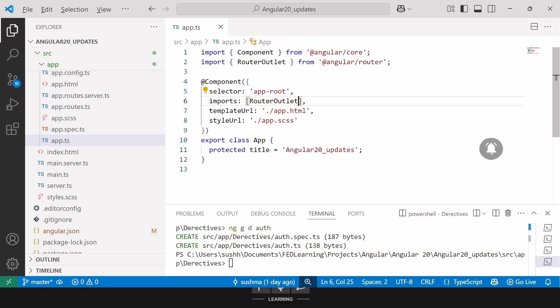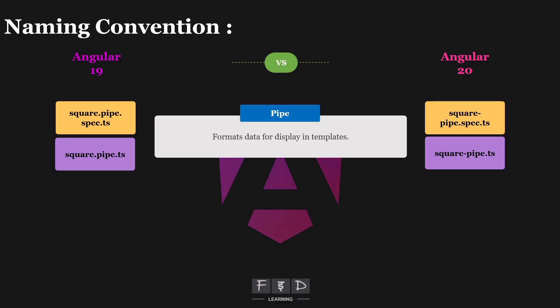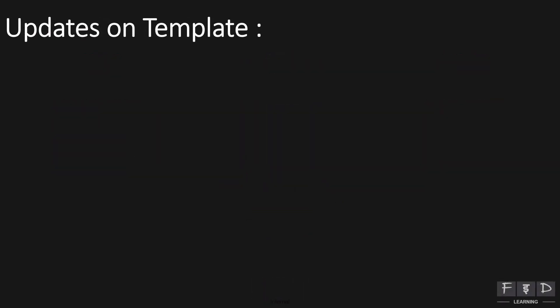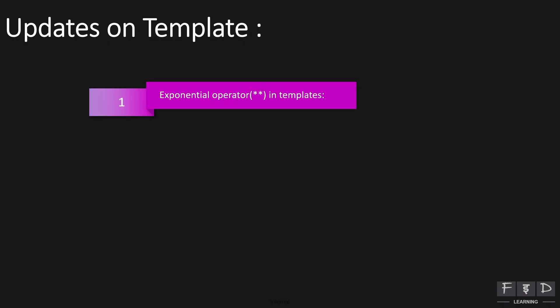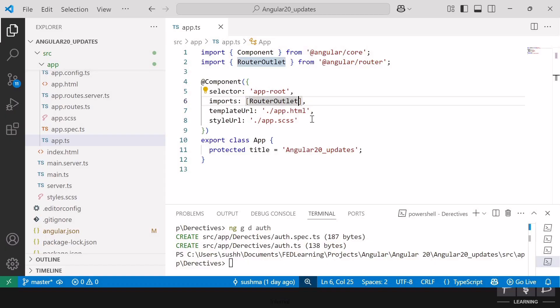Now let's move forward and explore another new feature in Angular 20: development updates on templates. We will dive into some exciting new aspects of template development. The first update is the exponential operator, also known as exponentiation, which is now supported in templates using the double asterisk operator. Let's try this out in VS Code.